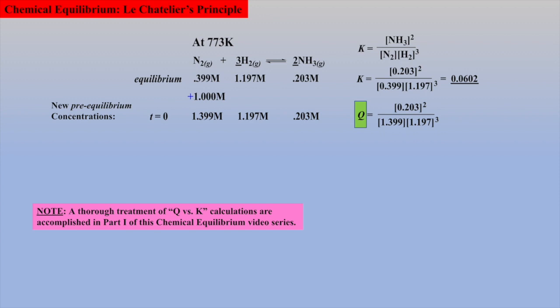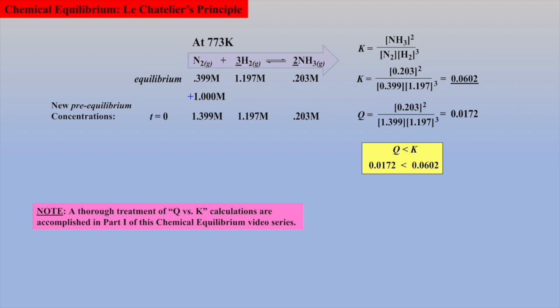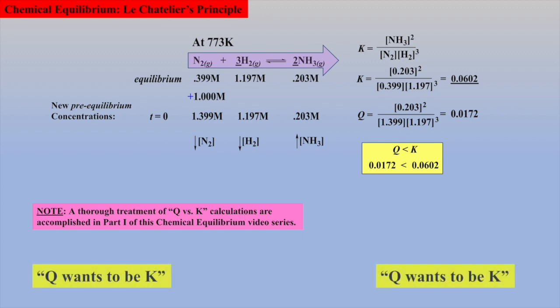So let's calculate the reaction quotient, abbreviated Q, using the new initial concentrations, and compare Q to our known K value. Here, Q is less than K, thus we predict a shift to the right towards products, which equates to a decrease in reactant concentrations and an increase in product concentration. An easy way to predict shift with a Q value is to abstractly imagine that the Q value will strive to become the K value — in other words, the reaction will adjust to afford new equilibrium concentrations such that the K value is obtained.